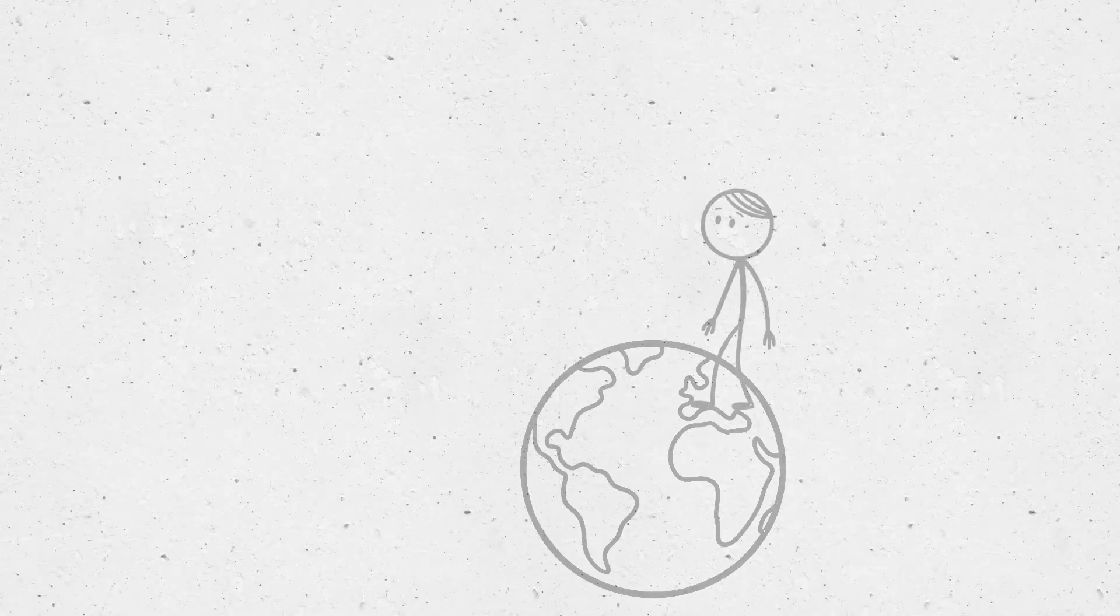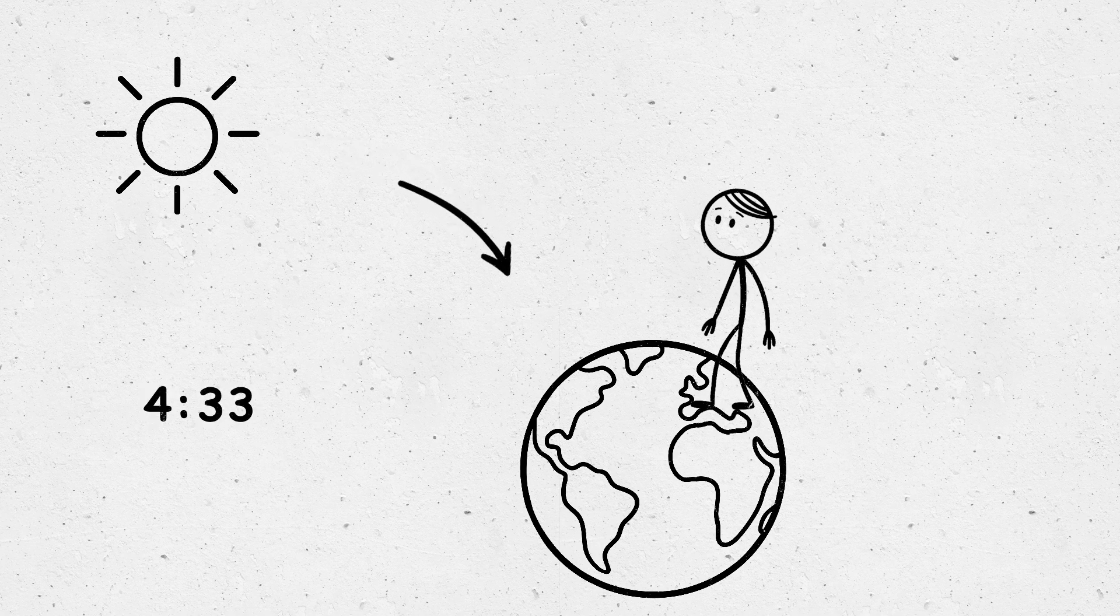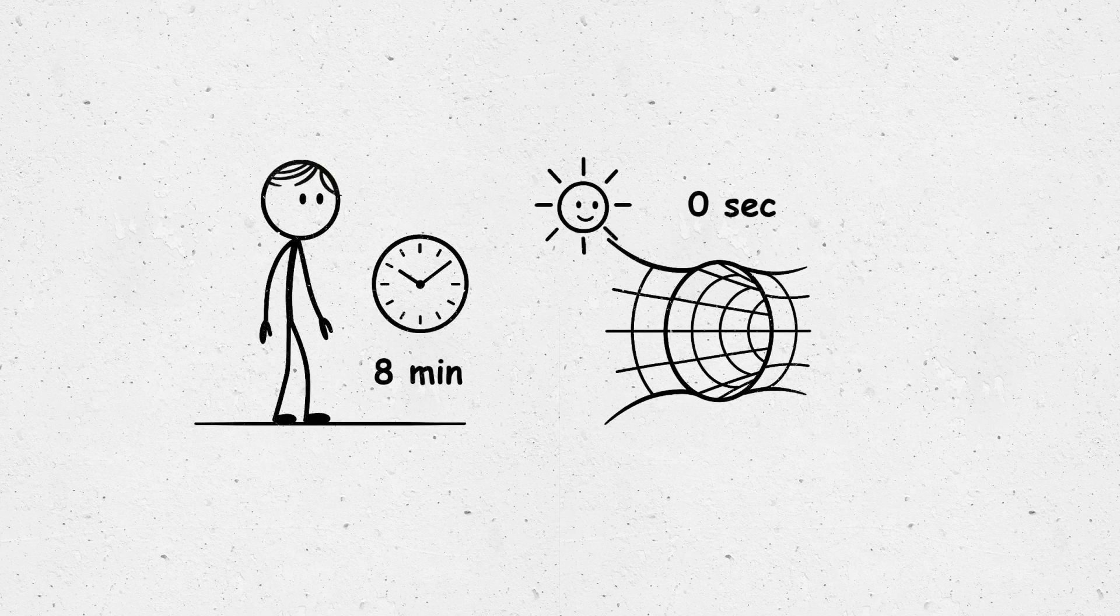But for us on Earth, light from the sun still takes eight minutes to get here. That's because we're not riding the beam. So what feels like eight minutes to us feels like zero to the photon.